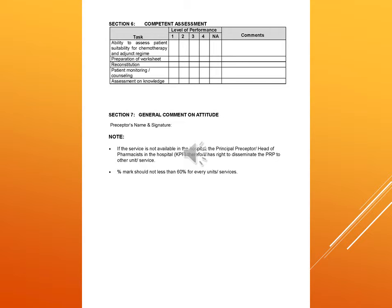Section 6 is the competency assessment. It has tasks covering ability to assess patient suitability for chemotherapy and appropriate dosage form, preparation of worksheet, reconstitution, patient monitoring and counselling, and assessment on knowledge. There are levels of performance: level 1, 2, 3, 4, and not available. Comments from the preceptor or chief pharmacist are also included. Section 7 includes general comments on attitude, followed by the preceptor's name and signature.